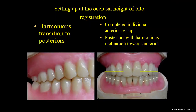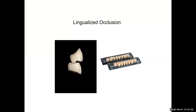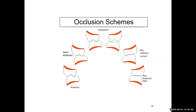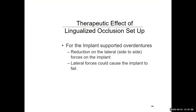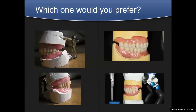We want harmonious transition to the posterior and a nice individualized setup that looks natural. I do a nice characterized wax-up that looks natural when we send it to the dental office, so the patient can expect what the final denture will look like just by looking at the wax-up. With lingualized occlusion — the lingual cusp going into the central fossa of the lower — there's a reduction of lateral side-to-side forces on the implant. Lateral forces could cause the implant to fail. I flare the buccal cusps on the upper slightly so they push away the cheek to prevent cheek biting and help redistribute forces evenly.